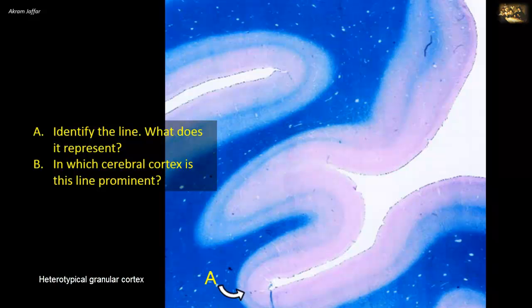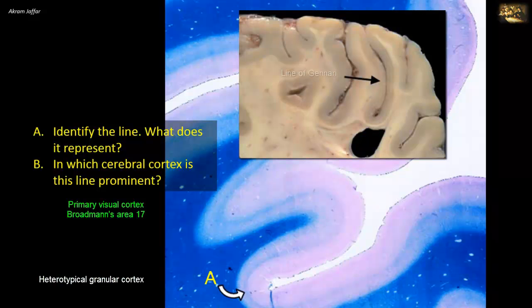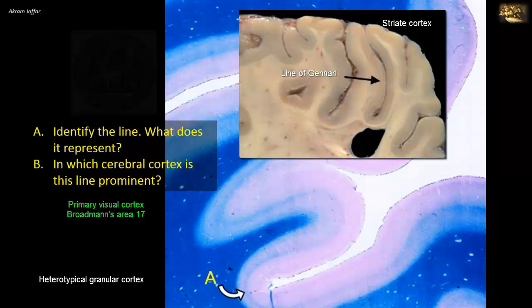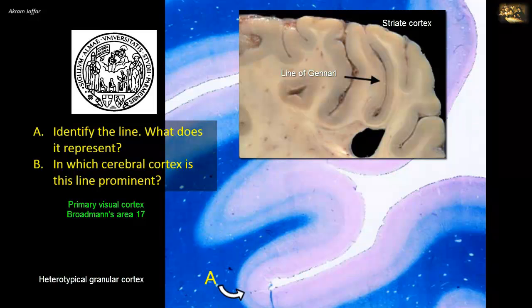In the primary visual cortex, Brodmann's area 17, in the walls of the calcarine sulcus of the occipital lobe, this line can be visible even to the unaided eye, and it is known as the line of Gennari. Because of the presence of the line of Gennari, the primary visual cortex is alternatively known as the striate area, or the striate cortex, because it is striated with this line. This structure is named for its discoverer, Francisco Gennari, who first observed it in 1776 when he was a medical student at the University of Parma.